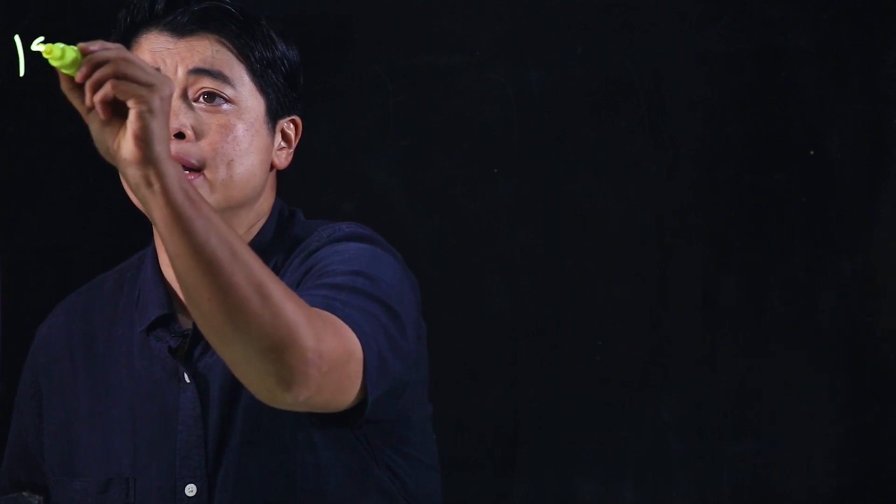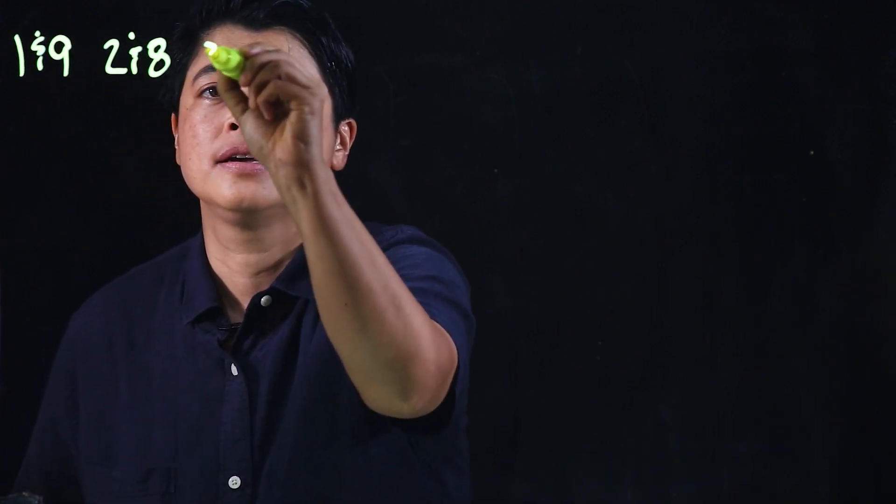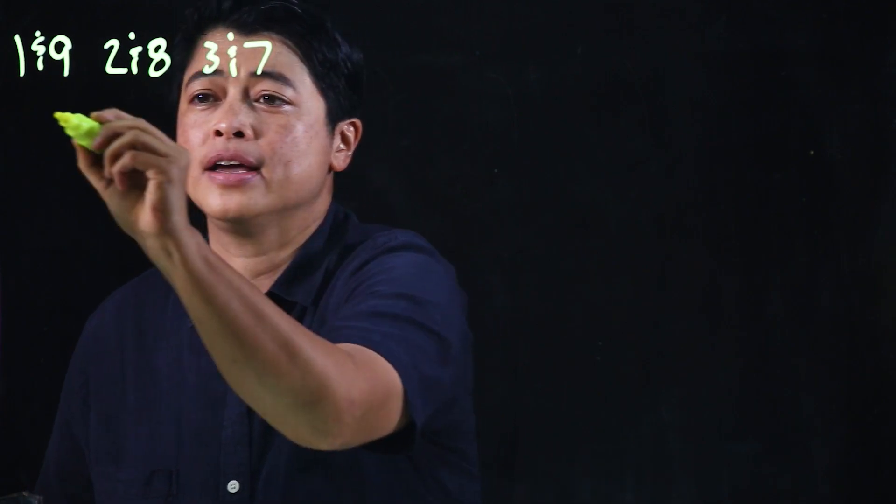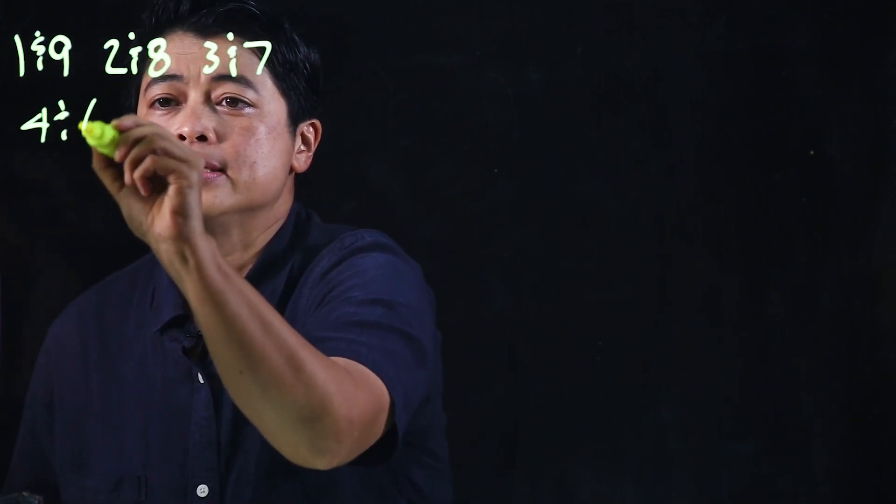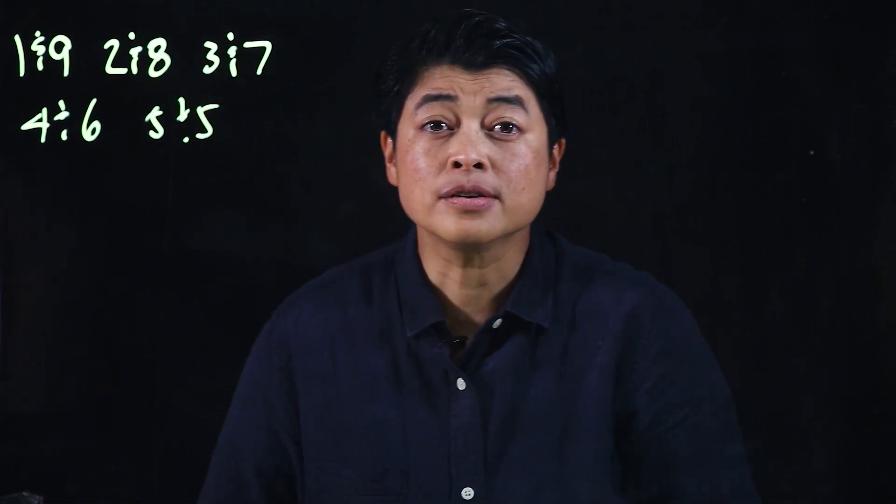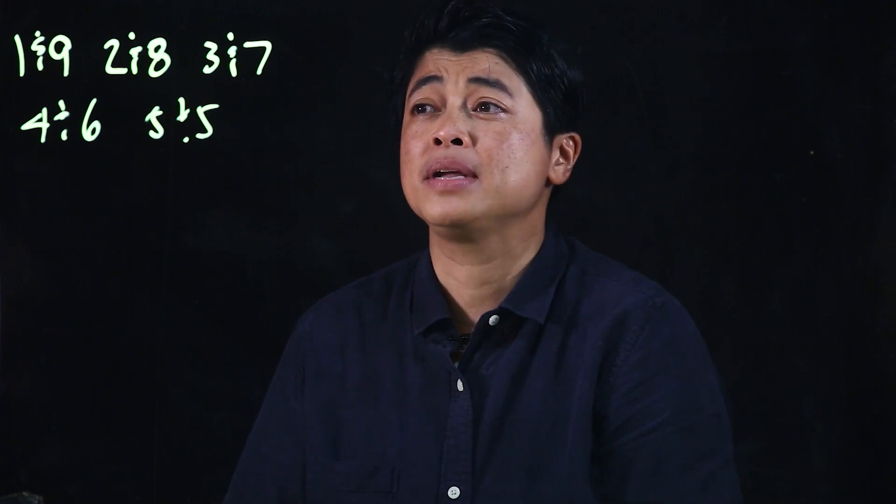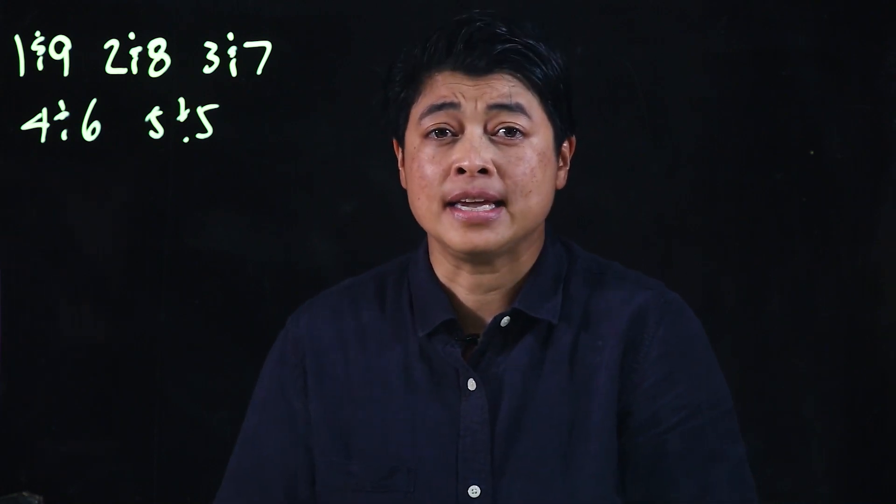So this is 1 and 9, 2 and 8, 3 and 7, 4 and 6, 5 and 5. We also need the groupings of tens that make hundreds.